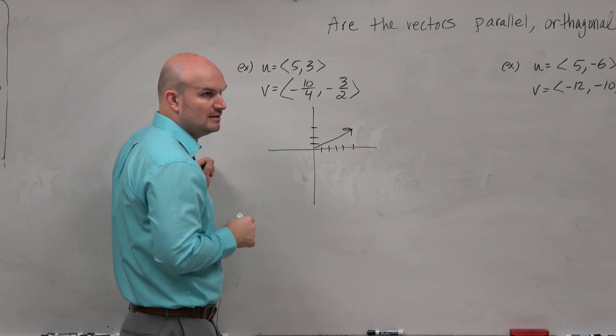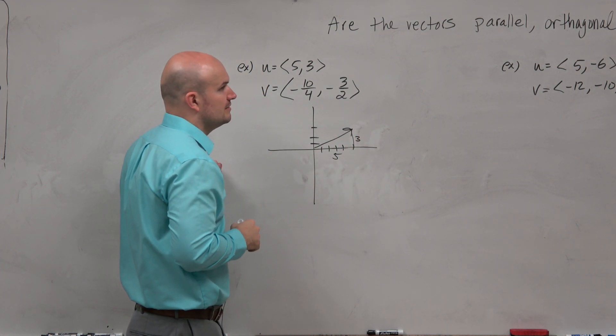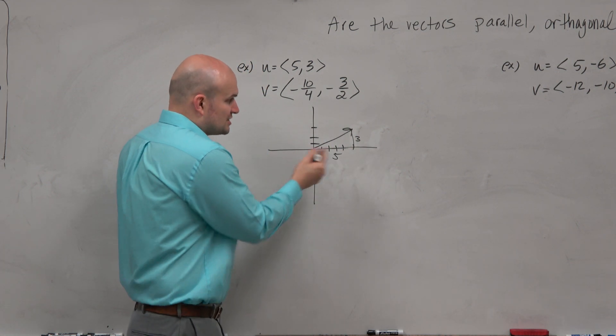Like do we know the slope of that? Like if we were to create a little triangle here, that's 5, 3. Right? So the slope is?